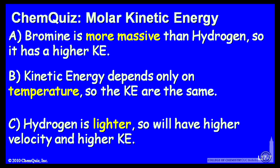Let's look at a possible explanation for each answer. A, bromine is more massive than hydrogen, so it has a higher kinetic energy. B, kinetic energy depends only on the temperature, so the kinetic energies are the same. Or C, hydrogen is lighter, so it will have the higher velocity and the higher kinetic energy. Think about each of those and make a selection.